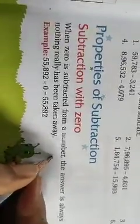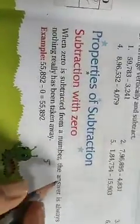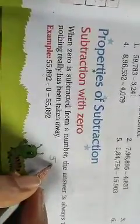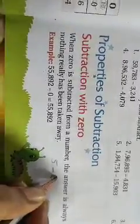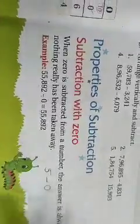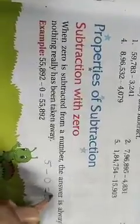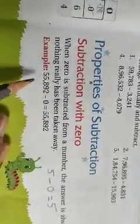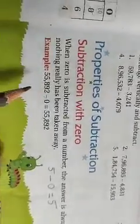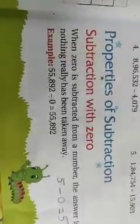Suppose you have five chocolates and I ask you to give me zero chocolates. You will give me zero chocolates, meaning you take away zero chocolates. Zero means nothing, so you have all five chocolates. This means whenever we subtract zero from a number, the answer is the number itself.